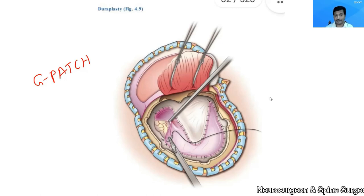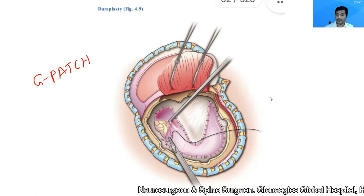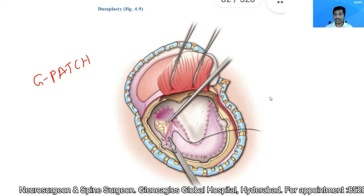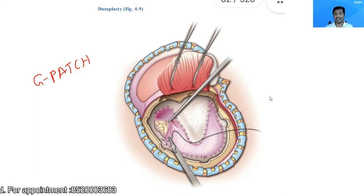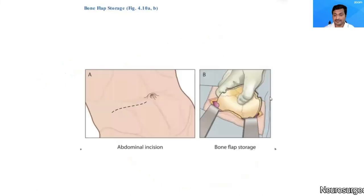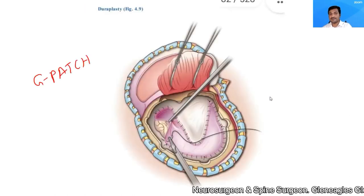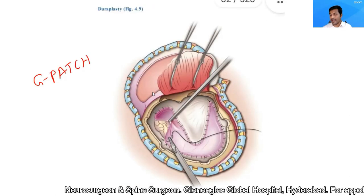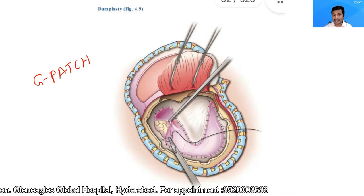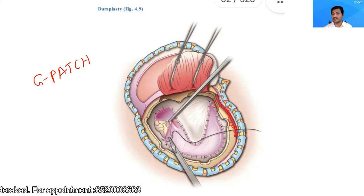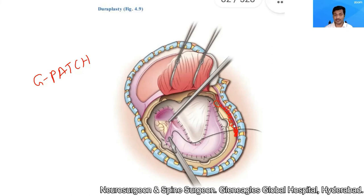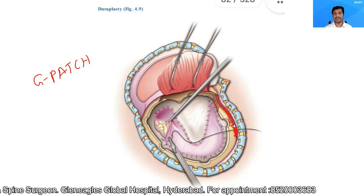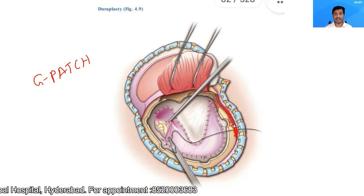When we re-open after three months, the Abgel would have formed a continuous layer. Contrary to common belief, even if I do a duroplasty with Abgel, the incidence of CSF leak is less in our experience. Then I anchor the muscle properly to the neighboring cuff of muscle, place a closed drain without suction, and close the skin in layers. This completes the cranial part of decompressive craniectomy.